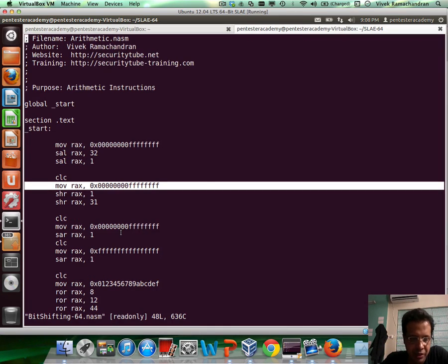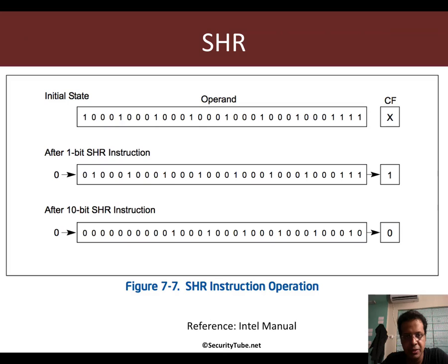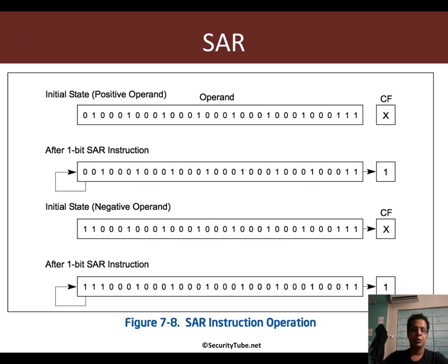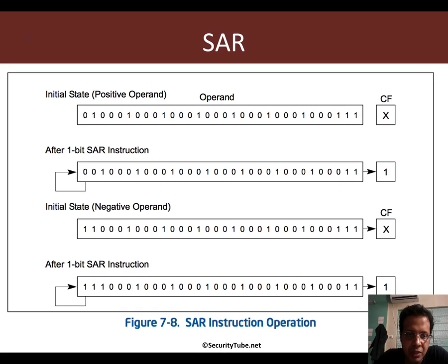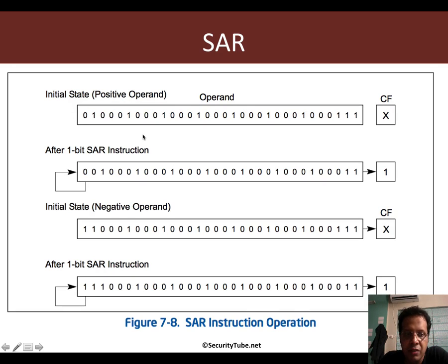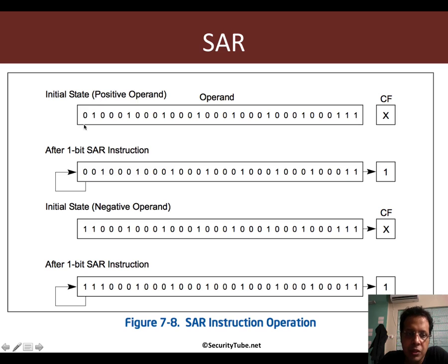The next instruction is shift arithmetic right, which is very interesting and can be confusing, so pay special attention. In arithmetic right shift, the behavior is different for a positive operand versus a negative operand. For the positive operand case — the sign bit is 0 — when we do a shift right by 1 bit, the LSB is replicated inside CF. Because it's a positive operand, a 0 gets filled in the most significant bit.